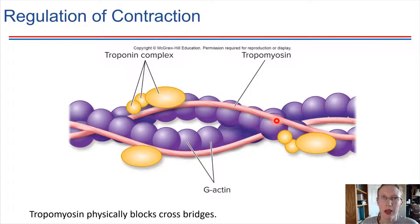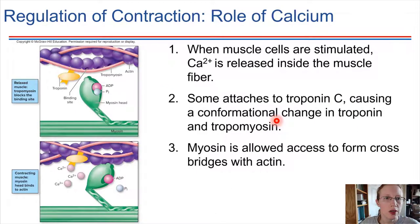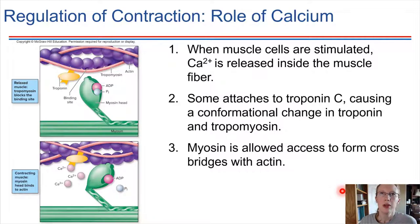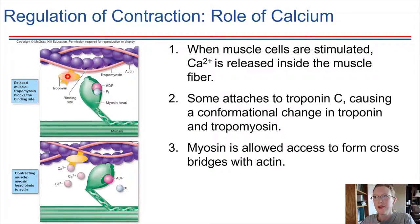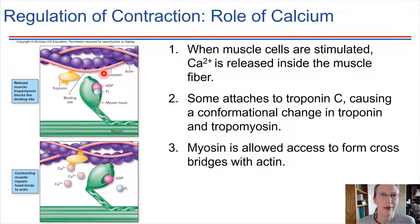What has to happen is tropomyosin needs to be rolled out of the way, and the way that takes place is through the action of calcium. Calcium is essential — it's necessary for muscle contractions to take place. When a muscle cell is stimulated and a contraction is going to take place, calcium gets released into the cytoplasm. The calcium comes over, binds to troponin, and makes troponin move out of the way. Troponin pulls tropomyosin with it, causing this whole pink thread of tropomyosin to roll out of the way, exposing the binding site for myosin.